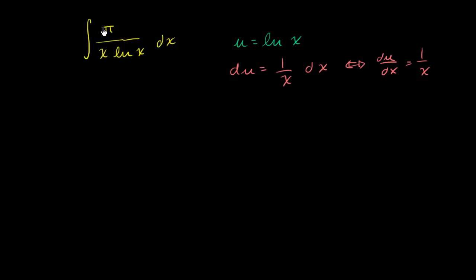The first thing I'm going to do is take the π and just stick it out front of the integral. So this becomes the integral of 1 over natural log of x times 1 over x dx. Now it becomes a little bit clearer. These are completely equivalent statements.